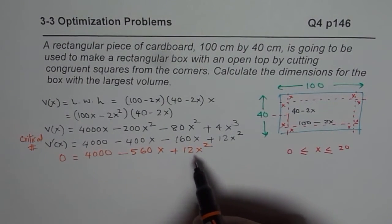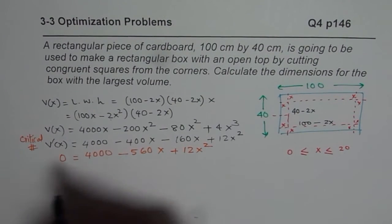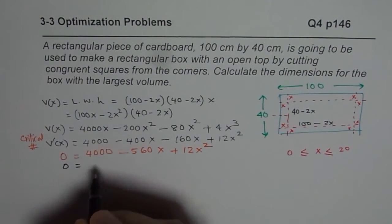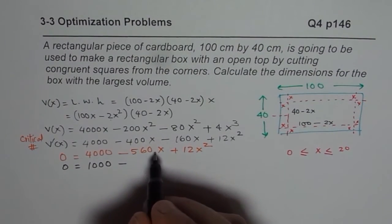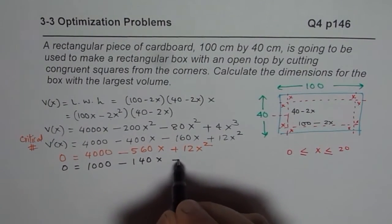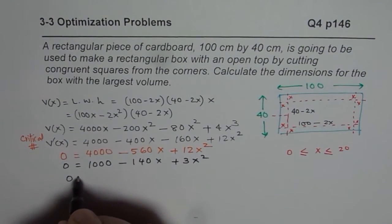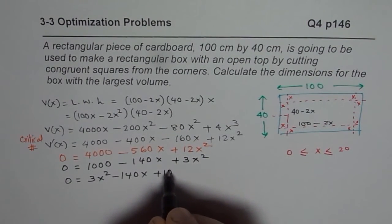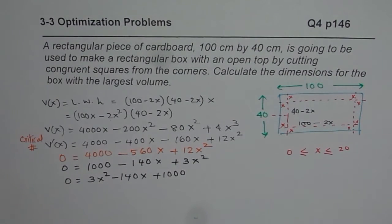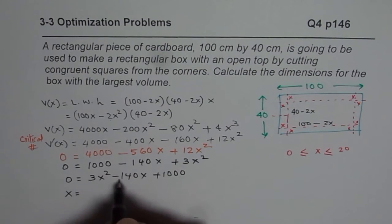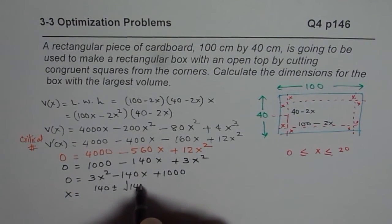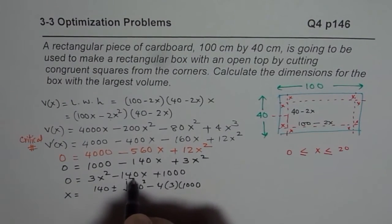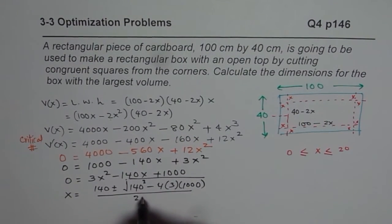We can use the quadratic formula or factor to solve this equation. Let's simplify by dividing by 4. That gives us 0 equals 1000 minus 140x plus 3x squared. Rearranging: 3x squared minus 140x plus 1000 equals 0. We apply the quadratic formula: x equals 140 plus or minus the square root of 140 squared minus 4 times 3 times 1000, all divided by 2 times 3.